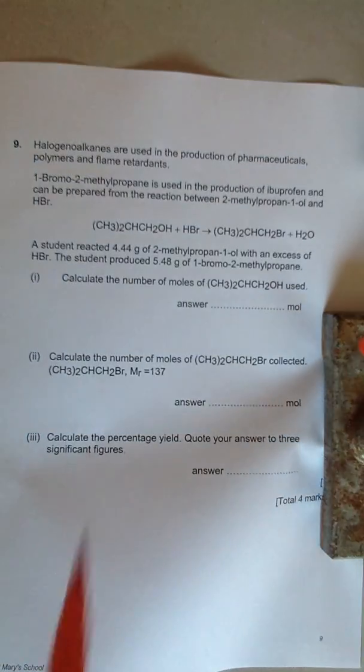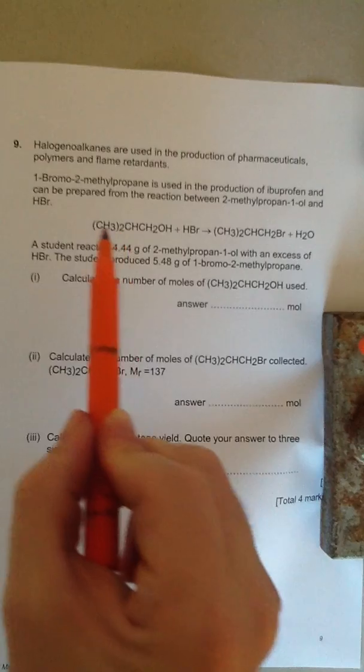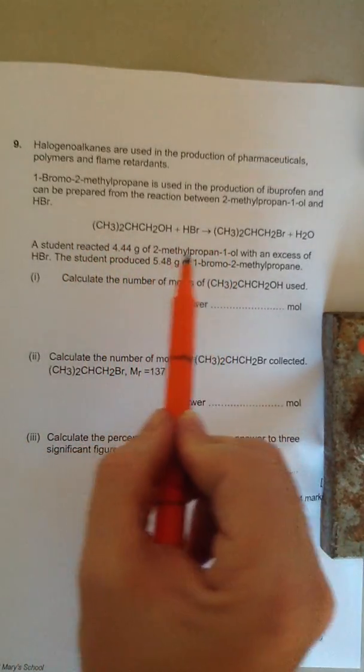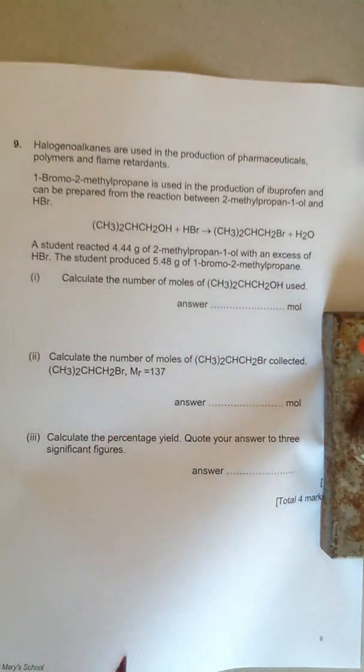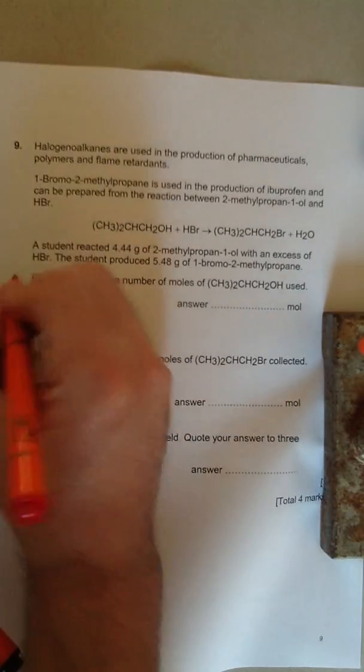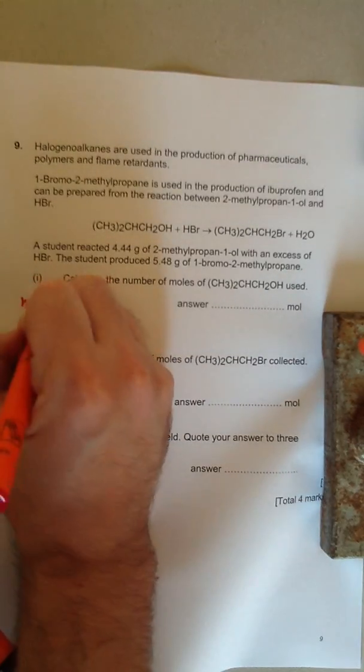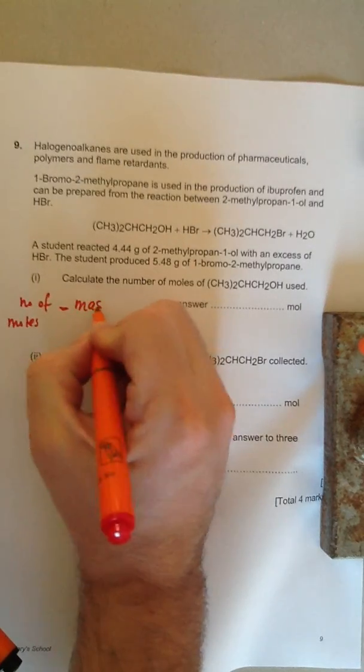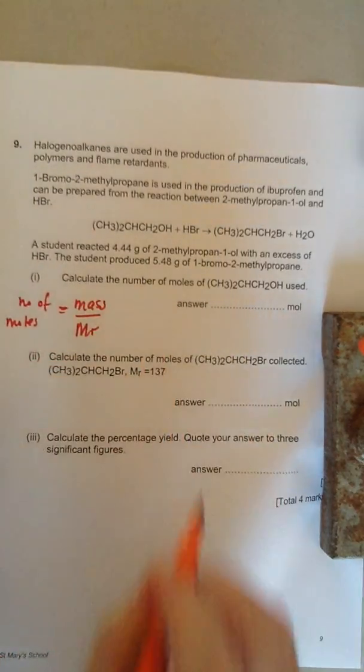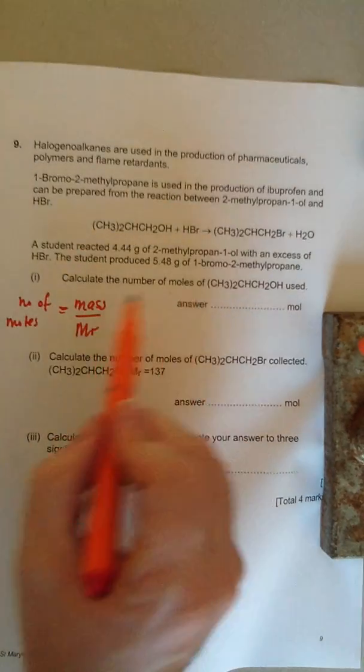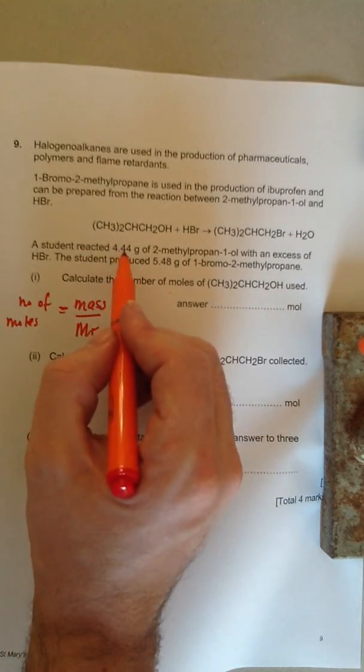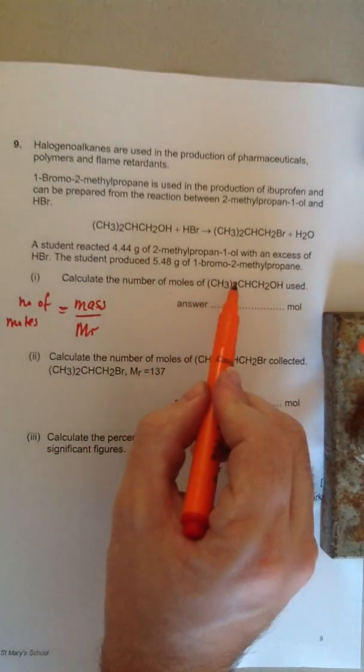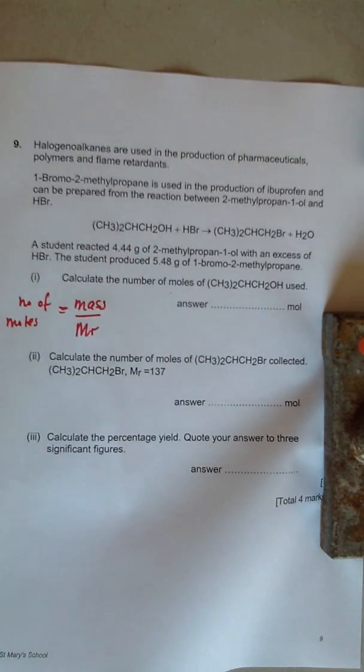So it says calculate the number of moles of the alcohol that were used. The student reacted 4.4 grams of 2-methylpropan-1-ol. The equation that you need is the number of moles is the mass you have in grams divided by the MR. The question asks us to calculate the number of moles, it's given us the mass, 4.44 grams, and we need to independently work out the MR of the 2-methylpropan-1-ol.